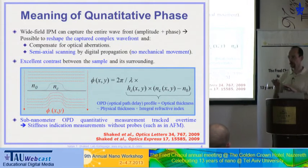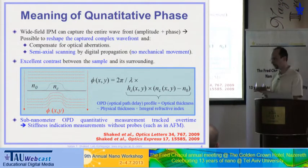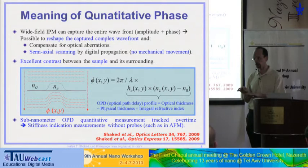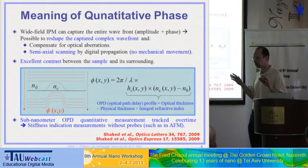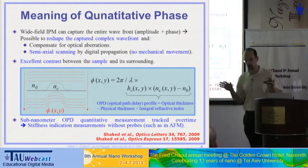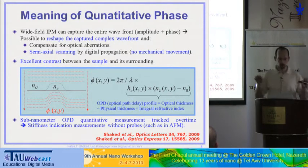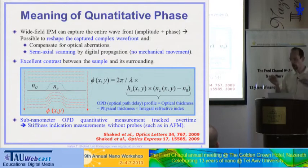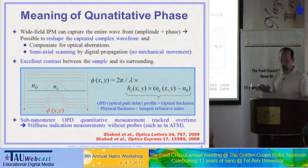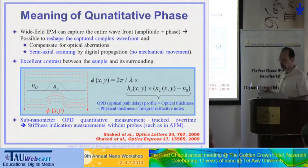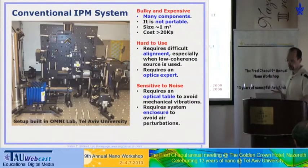It's an elasticity map — not a one-point measurement — without bringing any probe close to the sample, just by shining light on the sample. So it's very easy, non-destructive, and non-intrusive for the sample.